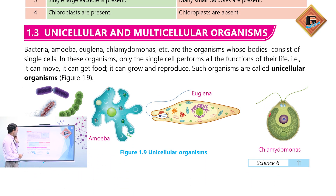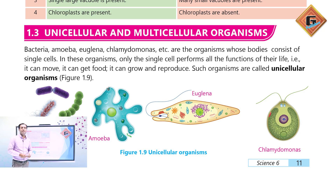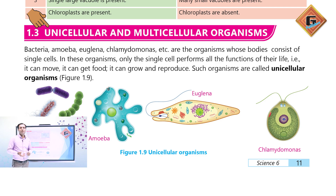Next is unicellular and multicellular organization. Dear students, some organisms consist of just one single cell. These are microorganisms. Examples include bacteria, paramecium, yeast, and many algae which are unicellular.